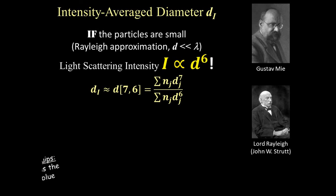For the sake of simplicity, we'll just consider the Rayleigh limit, where the particles are much smaller than the wavelength of light. In that case, the intensity of light scattered by a particle scales with the diameter to the sixth power.